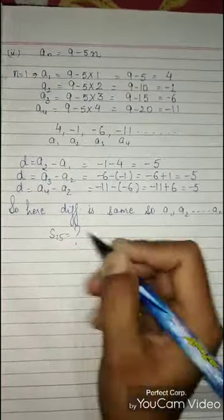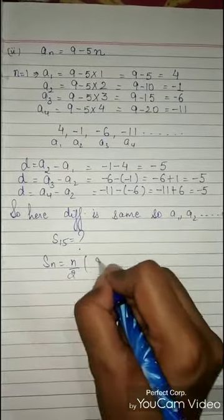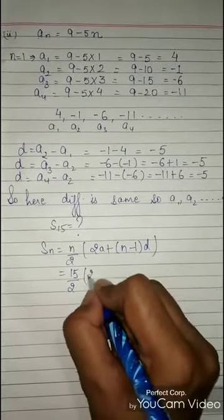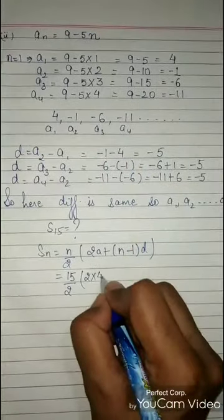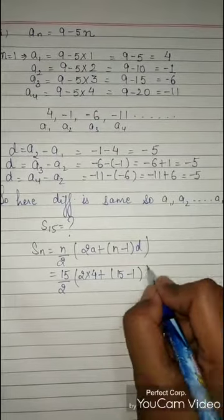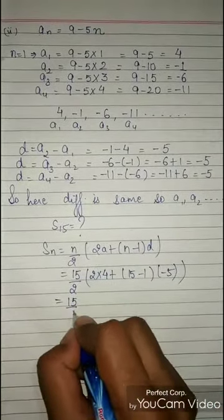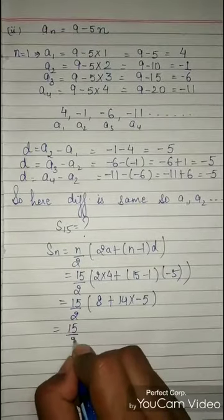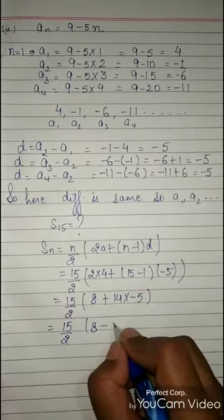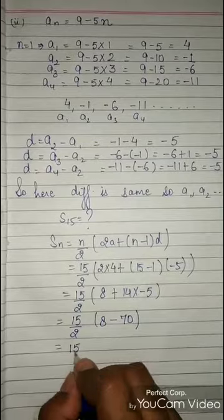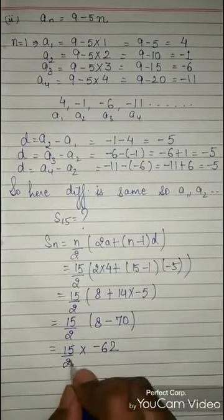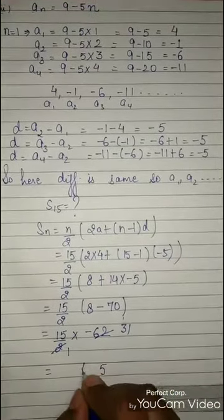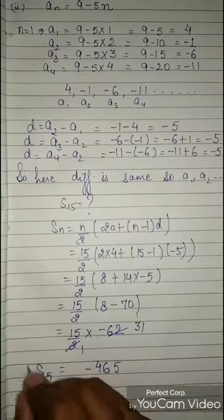Finding S15: Sn = n/2 × (2a + (n−1)d), so S15 = 15/2 × (2×4 + (15−1)×(−5)) = 15/2 × (8 + 14×(−5)) = 15/2 × (8 − 70) = 15/2 × (−62) = 15 × (−31) = −465. The sum of 15 terms is −465.